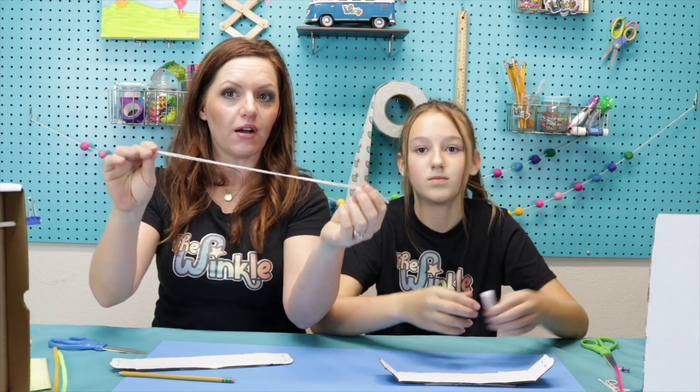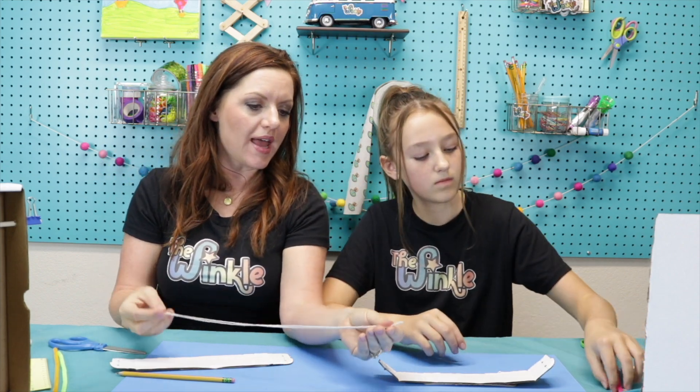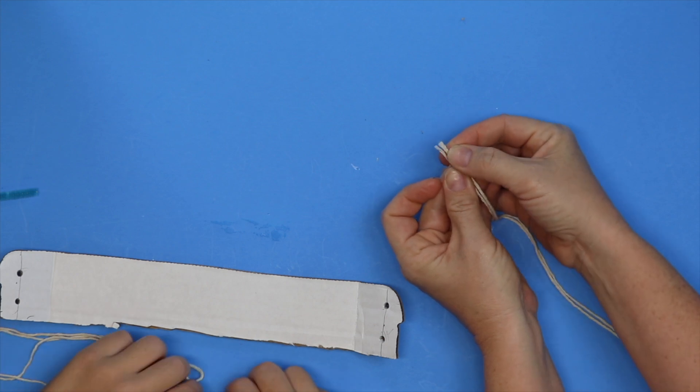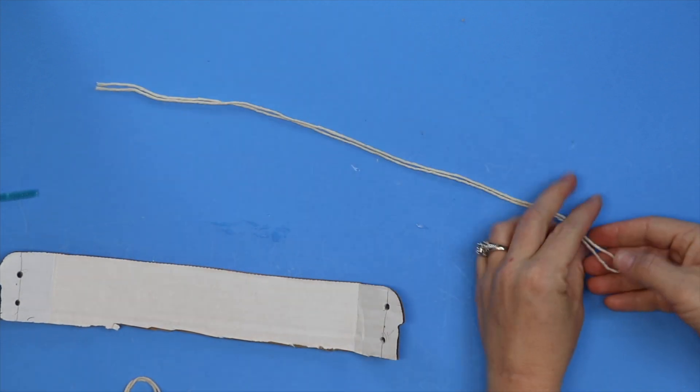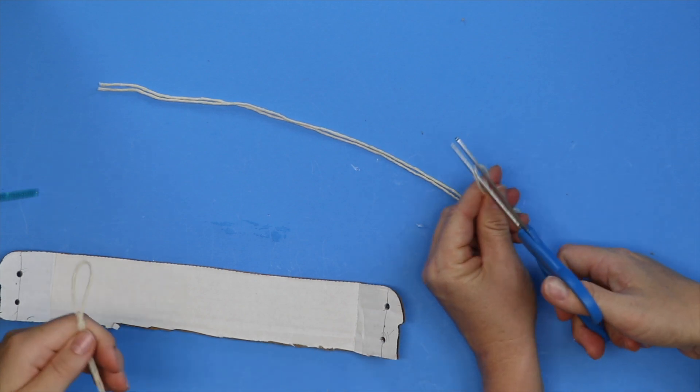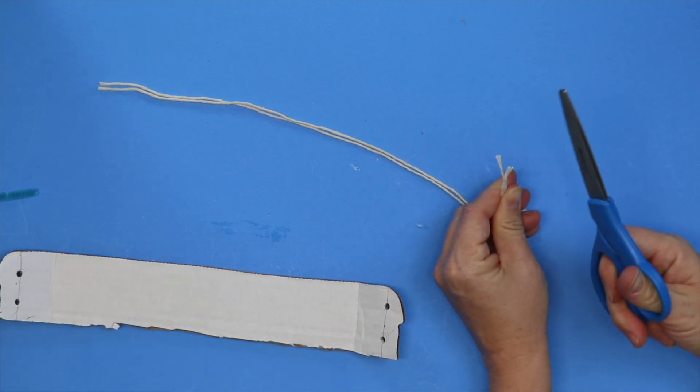Okay, now we're going to take our string and fold it in half, meaning these two ends should be the same. And you make a loop on this side, and we're going to cut it in half. So you just take your scissors right on that loop and snip.